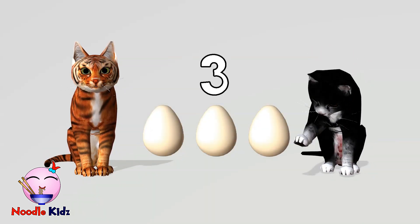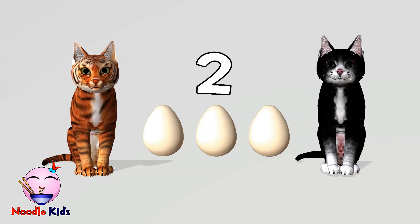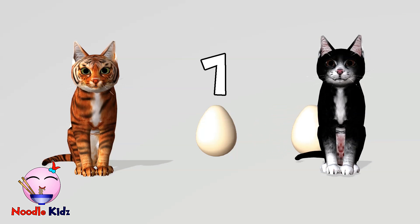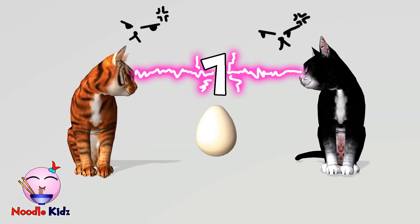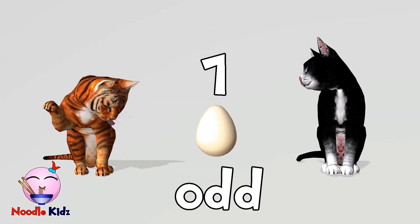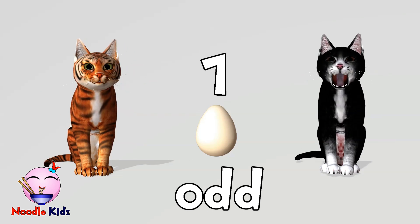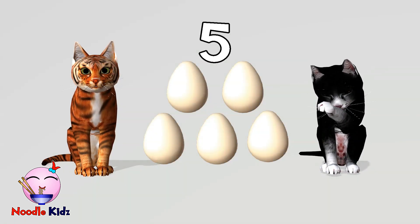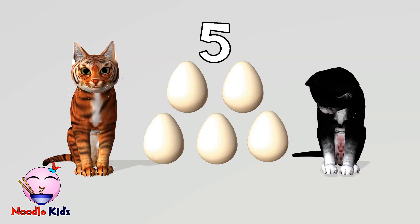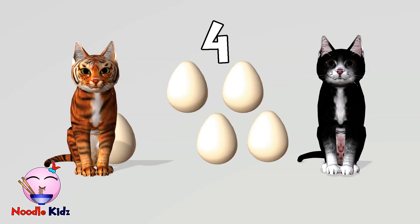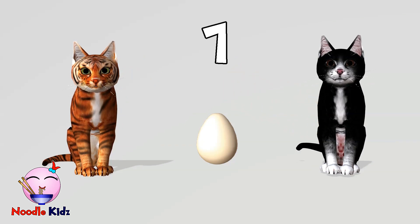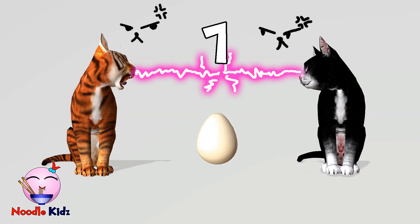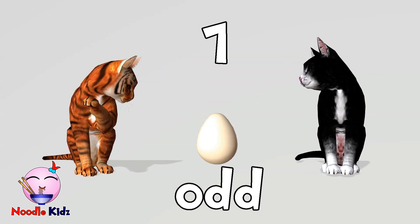What about three eggs? Let's divide the eggs. We have another odd one out again, which means five is also an odd number.